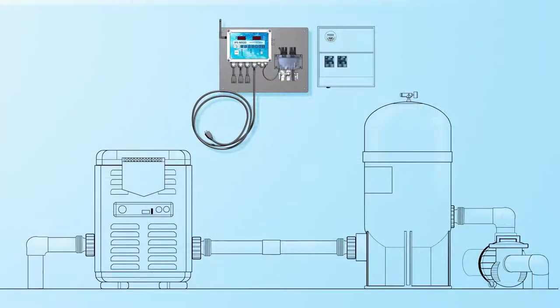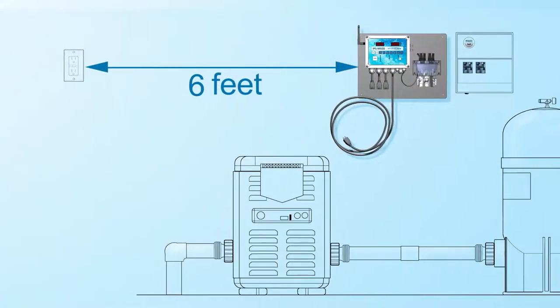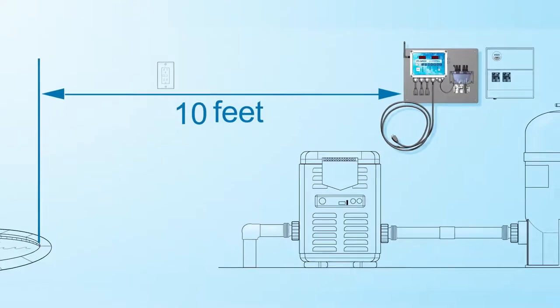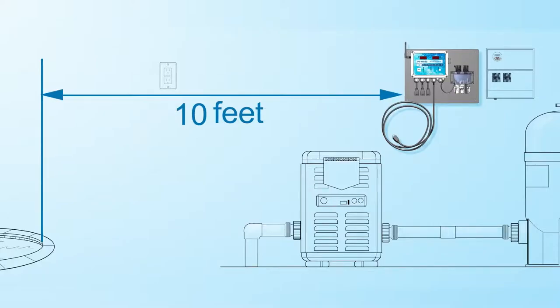Choose a location to mount the controller within 6 feet of a GFCI power source. It should also be at least 10 feet from the water's edge. Choose a spot near the time clock with easy access, and securely attach the mounting board.